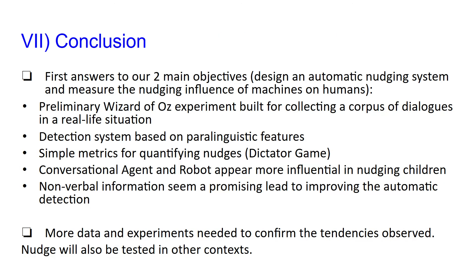To conclude, this article presents our first answers to two main objectives: designing an automatic nudging system and measuring the nudging influence of machines on humans. We have described a preliminary Wizard-of-Oz experiment for collecting a corpus of dialogues in a real-life situation, shown a detection system based on paralinguistic features, designed simple metrics for quantifying nudges, and shown that conversational agents and robots appear more influential in nudging children. Non-verbal information is a promising lead for improving automatic detection of user state. In the future, more data and experiments are needed to confirm these tendencies, and we intend to test nudges in other contexts, for example with a different population. Thank you for your attention.